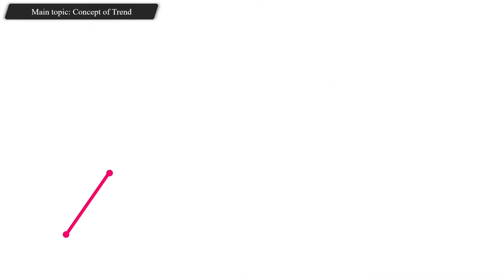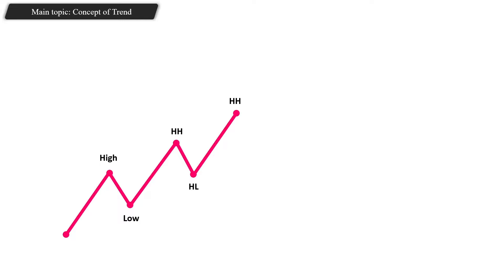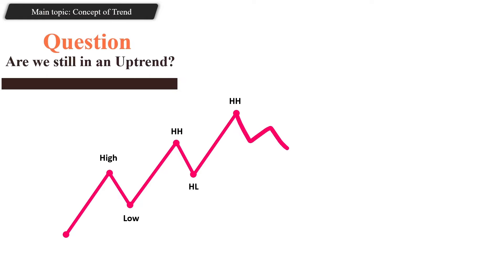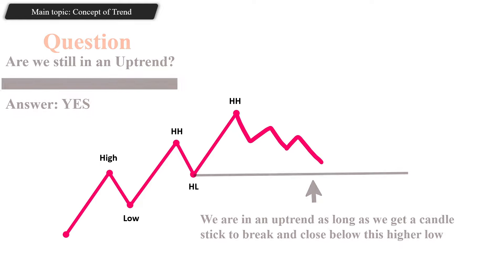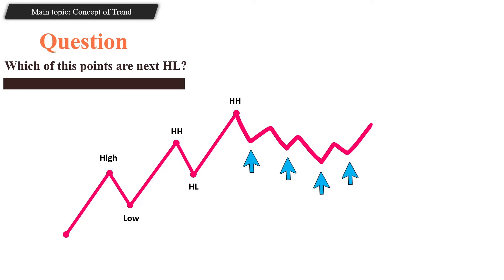In an uptrend, the market makes higher highs and higher lows — but the problem is the market barely moves this clearly and is often choppy. The question becomes: are we still in an uptrend? The answer is yes — we remain in an uptrend until we get a candle that breaks and closes below the higher low.